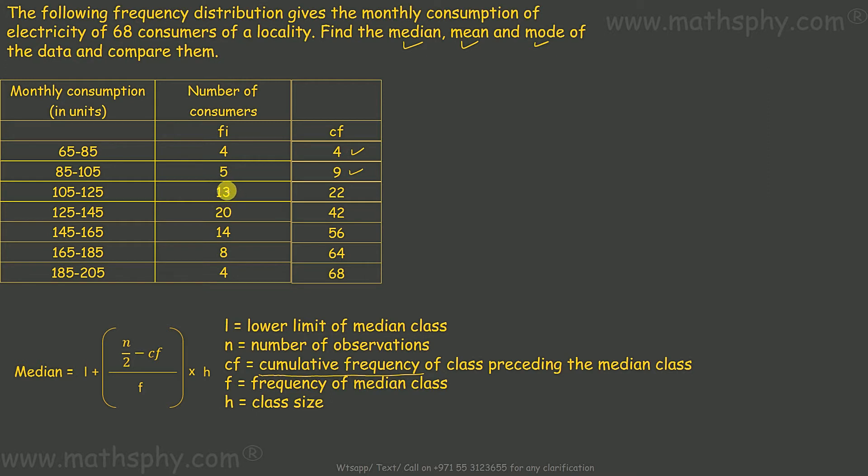Third one, 13, gets added to previous one 9, becomes 22. 13 plus 9 is 22. Likewise, 20 plus 22 is 42; 14 plus 42 is 56; 8 plus 56 is 64; 4 plus 64 is 68. Now, if you see the last cumulative frequency which is 68, if you sum this frequency, this will also be 68. Total frequency or last cumulative frequency should be equal.